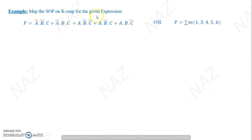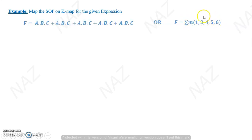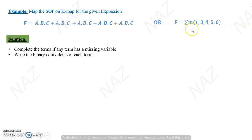Now let's take another example: map the SOP form for the given expression. This expression can be given in two forms — either as a standard SOP expression or using decimal equivalents. The decimal equivalents listed are 1, 3, 4, 5, 6. The minimum number is 1 and the maximum is 6, so this means it is a three-literal expression and we will use a three-variable K-map.